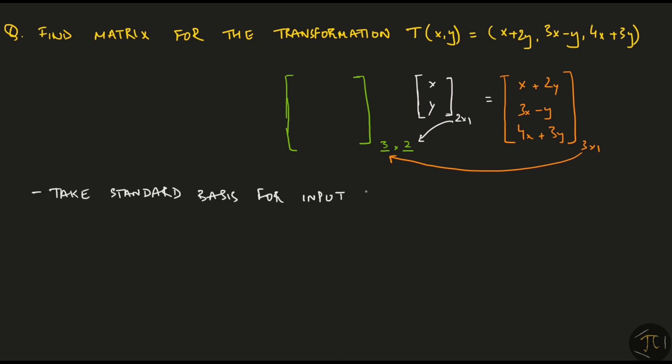We will take the standard bases for both R2 and R3. Then we calculate where each of the standard bases would go. And then the matrix would just contain these two vectors.